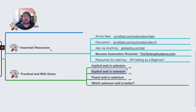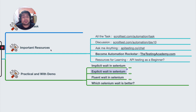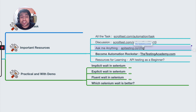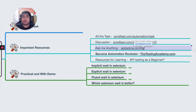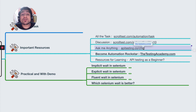Thanks a lot for watching. I hope you now understand the different types of waits in Selenium. If you have any doubts, you can go to testingacademy.co/chat or put them in the comments — I will be happy to help. I'll see you in the next video. I hope you are following the 30 Days of Automation and Testing challenge, where we learn different concepts related to automation, Selenium, Cypress, and more to help you become a better automation tester.